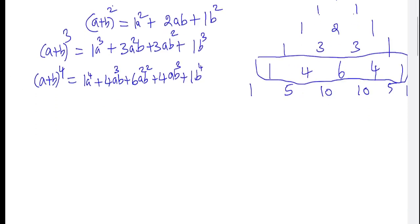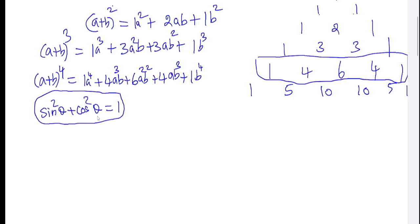sin²θ + cos²θ = 1 — this is the basic identity equal to 1. sin²θ + cos²θ = 1. From this formula, sin²θ = 1 − cos²θ. We will express sin⁴, sin⁶, sin⁸ in terms of cos using this substitution.